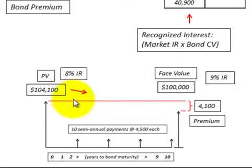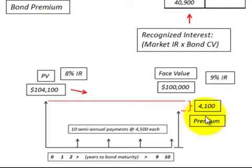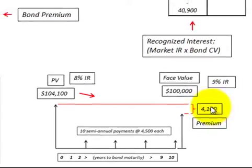If we're looking at a bond issued at a premium, its present value — what we receive for it — is greater than its face value. That difference is called a premium, and it has to be amortized over the life of the bond.